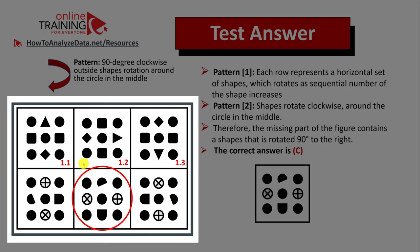Now let's look at pattern two, and pattern two represents 90-degree clockwise outside shape rotation around the circle in the middle. As you can see, there is always a circle in the middle and the outside shapes rotate around this circle. So let's follow the triangle.